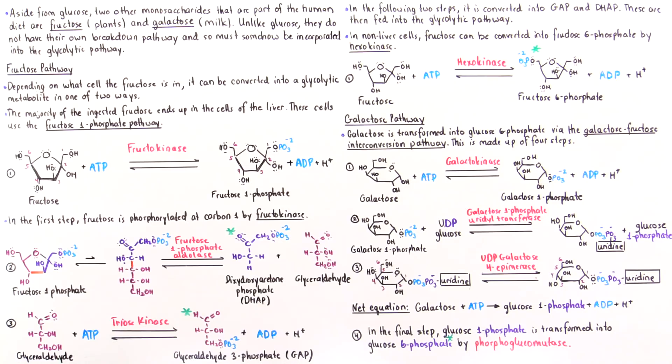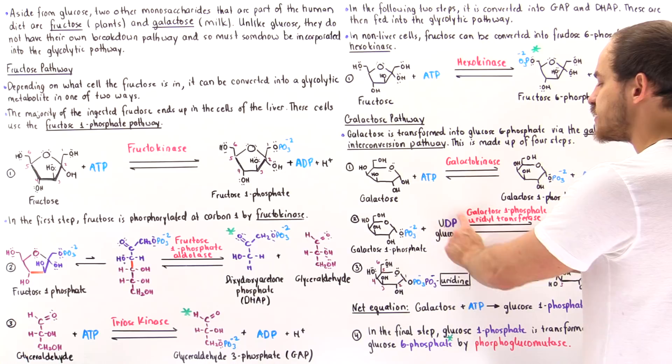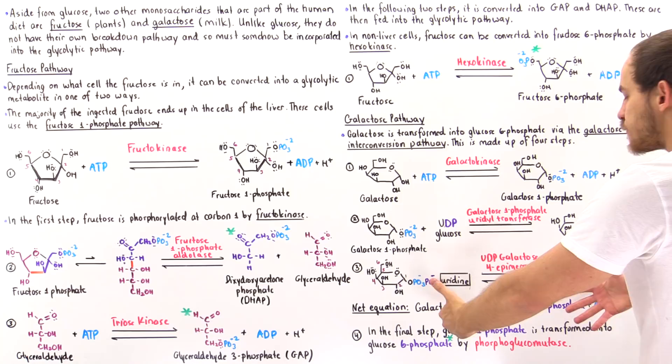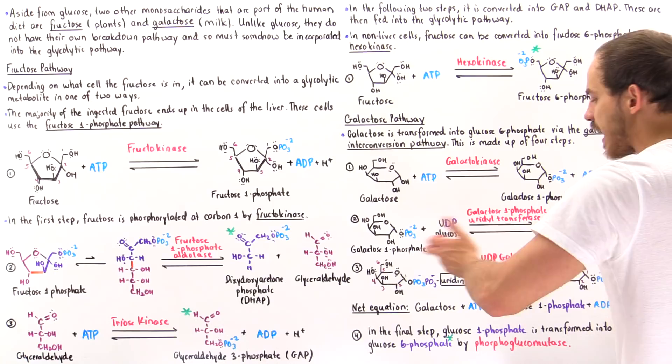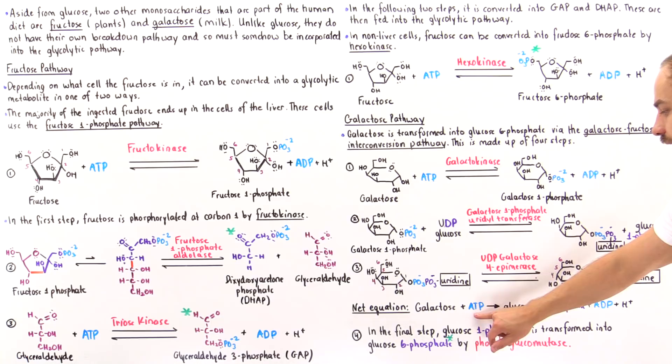The point of step three was to regenerate UDP glucose. When we sum up all three steps, the UDP glucose cancels out, and the net equation after three steps is: galactose + ATP → glucose 1-phosphate + ADP + H+.